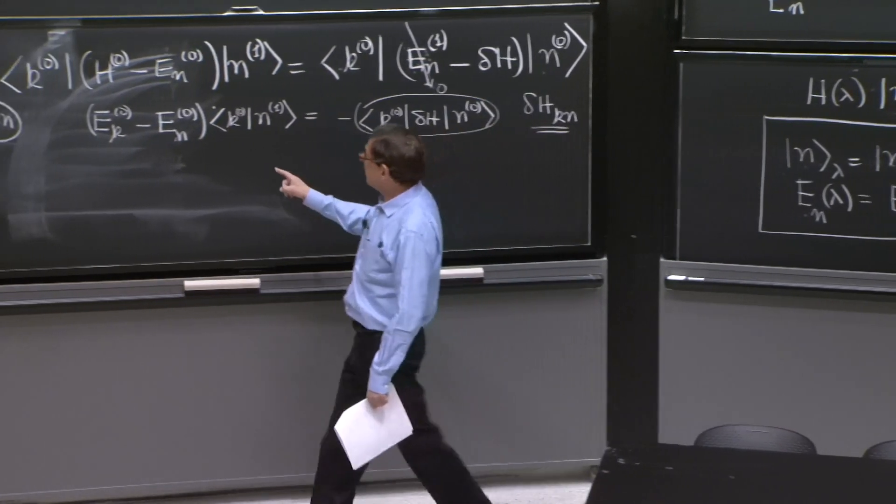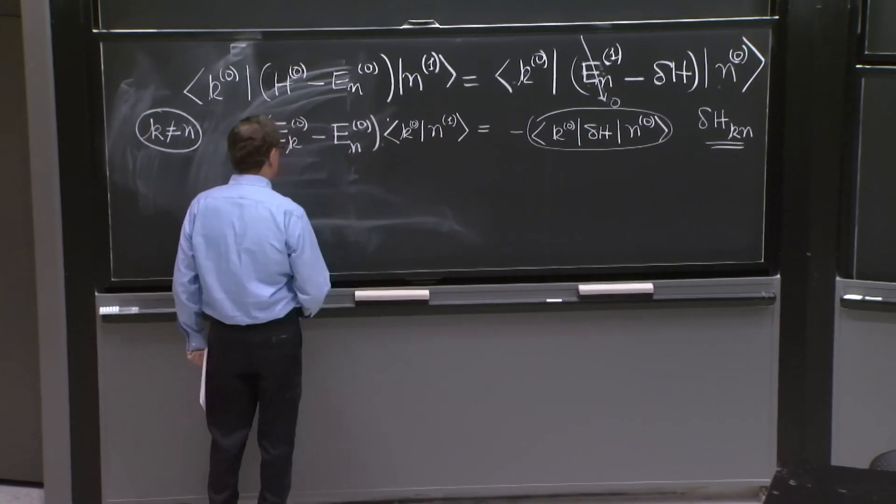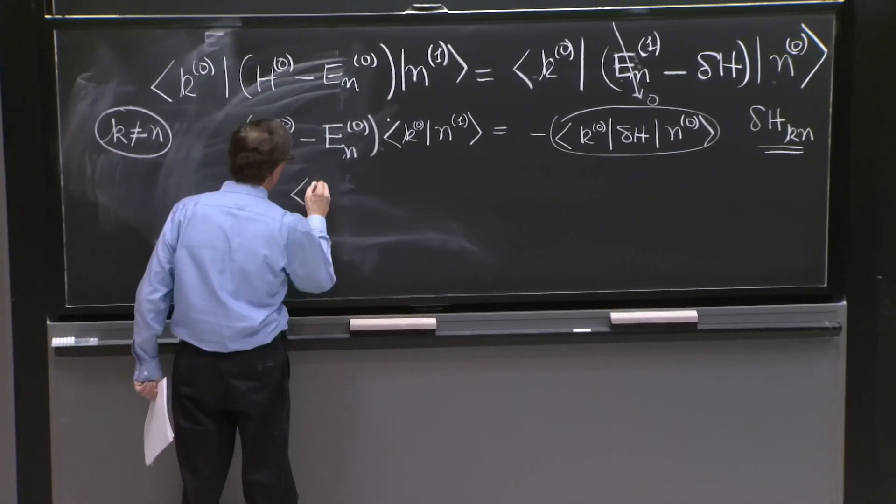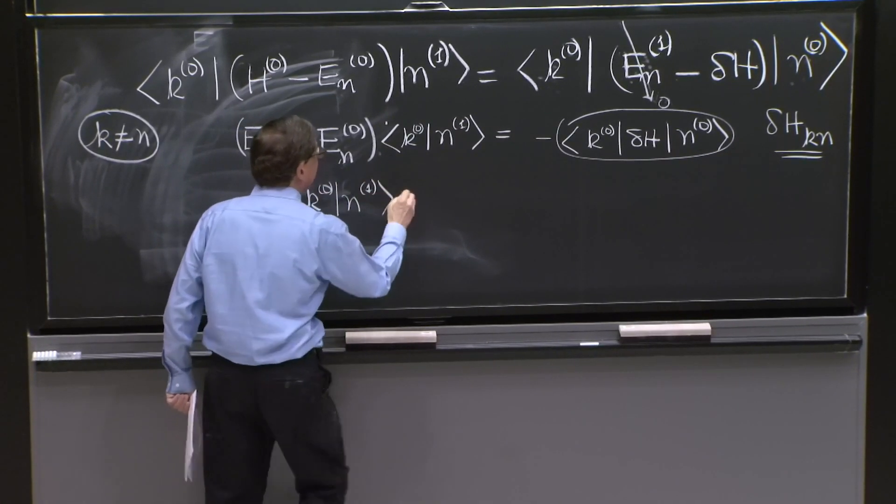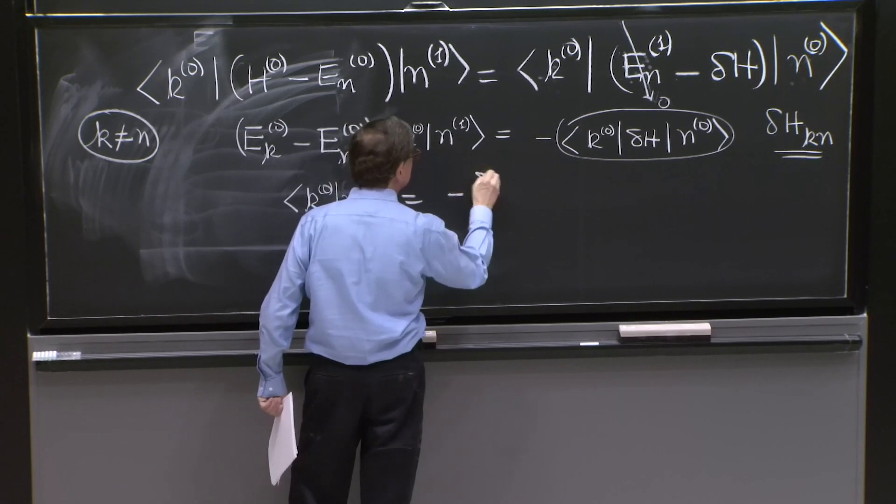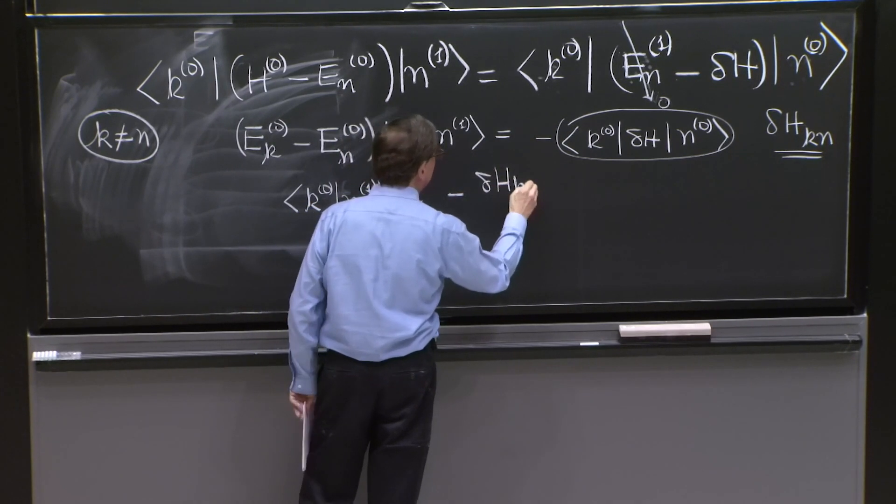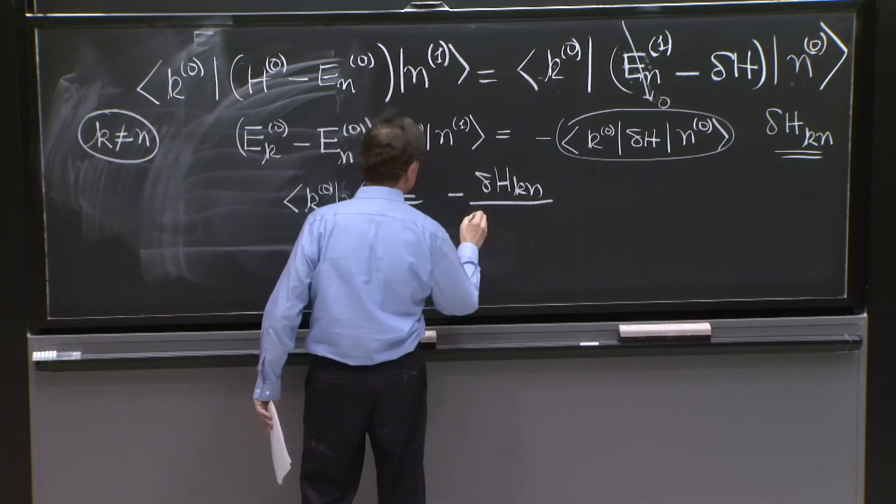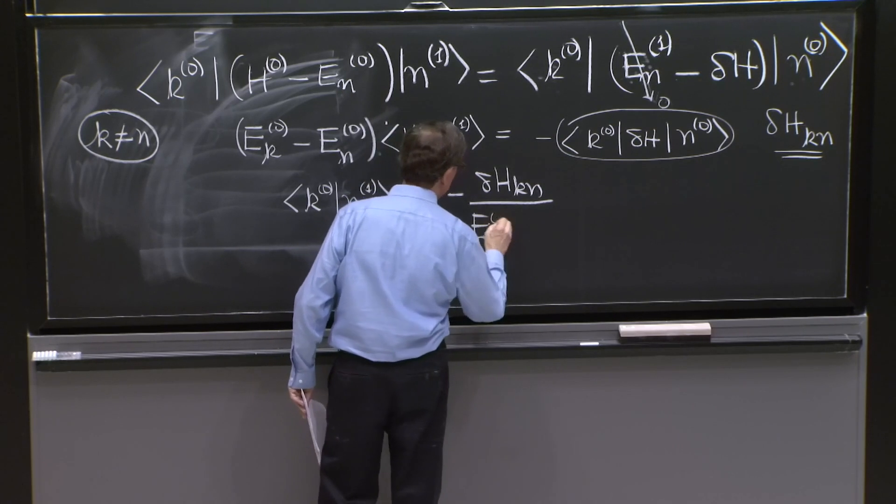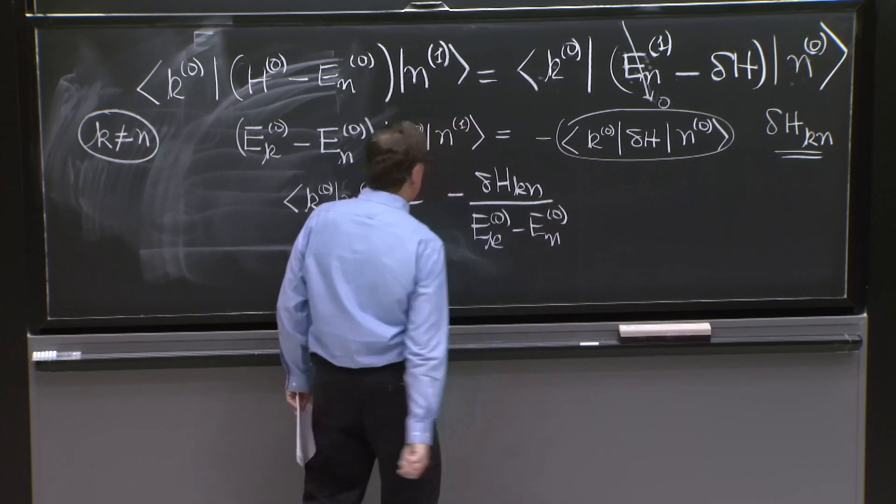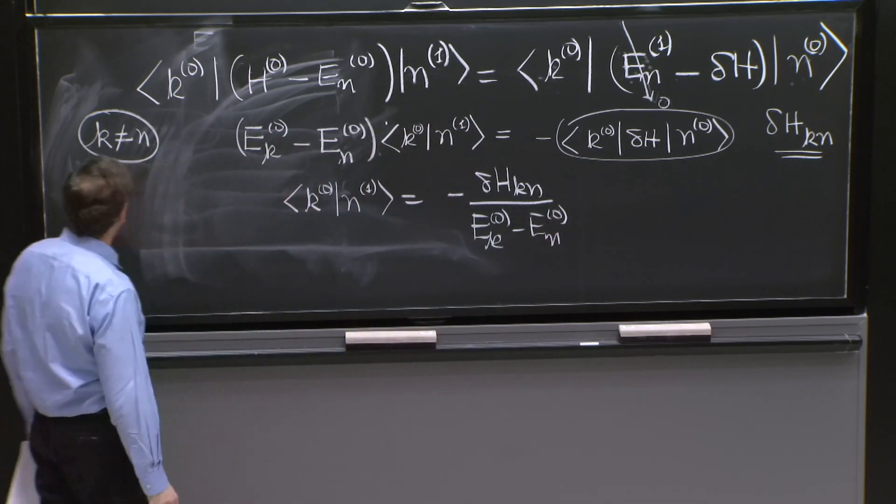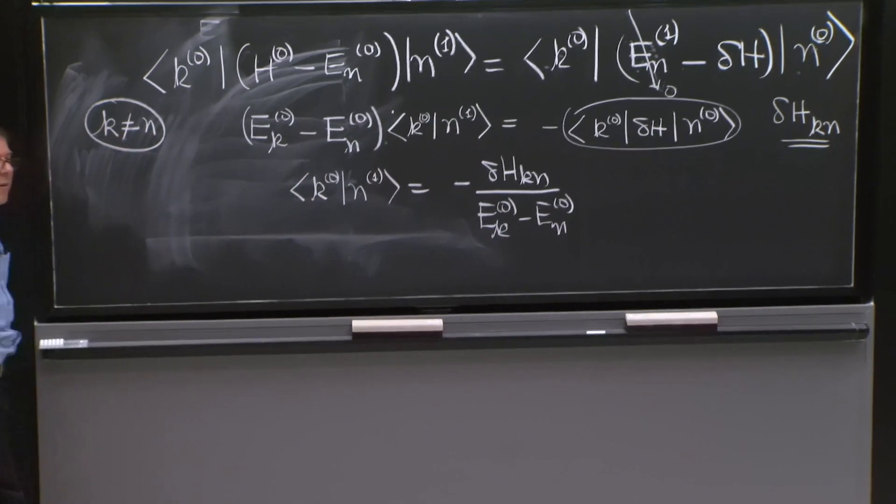And this is a number, so I can solve: k0 n1 is equal to minus delta H_kn divided by E_k0 minus E_n0. And this is true for every k different from n.